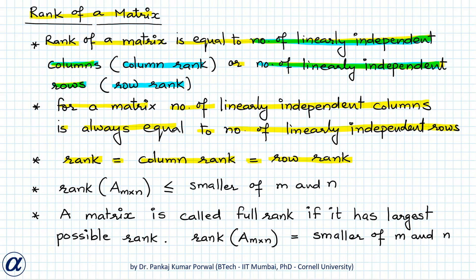If we have a matrix of size m by n, that is the matrix has m rows and n columns, then the rank of the matrix will always be less than or equal to the smaller of the two numbers m and n. This means rank can never exceed the number of rows or number of columns. In general, a rectangular matrix A is called full rank if it has the largest possible rank it can have — that is, rank equals the smaller of m and n.